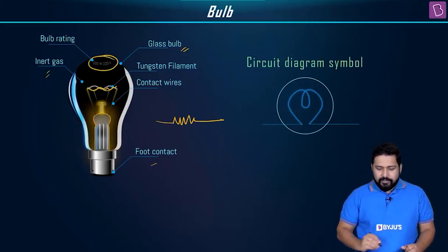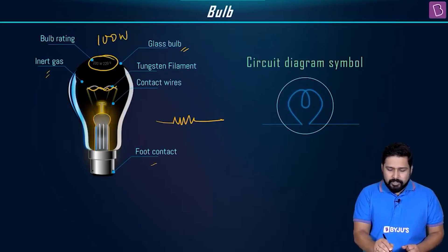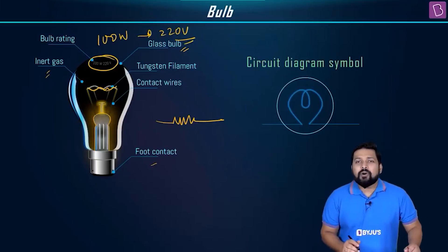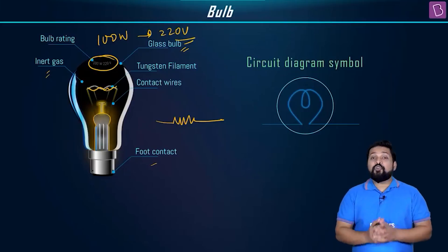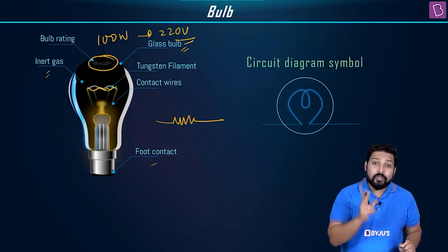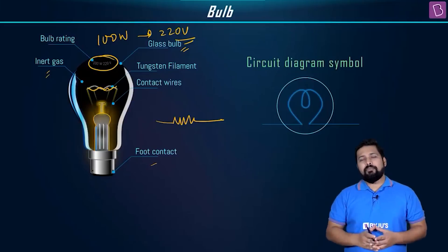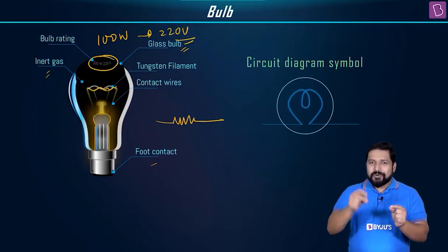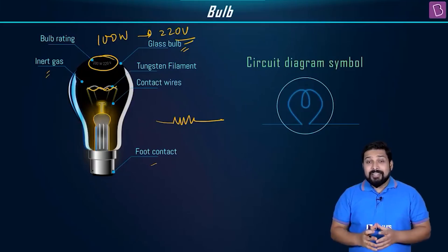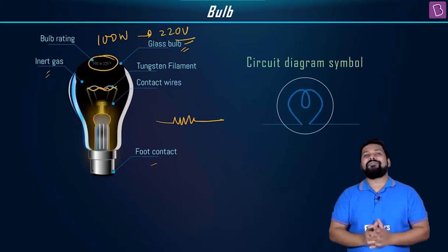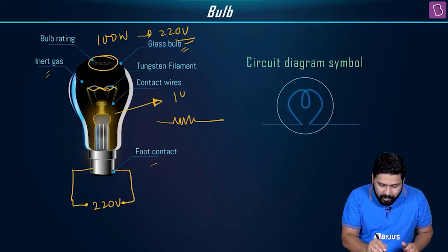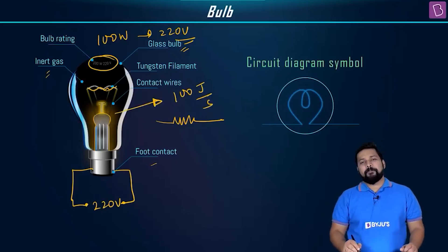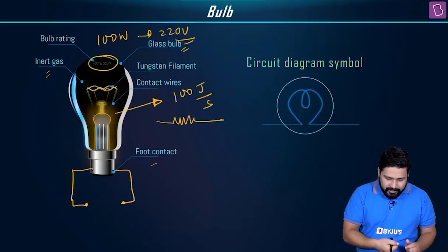Over here is the rating — this is very important. The rating is 100 watts, 220 volts. The meaning of this is that this bulb is going to dissipate 100 watts of power, which means 100 joules every second, but only when it is connected across a potential difference of 220 volts. What if you give it a lesser voltage, like 50 volts?